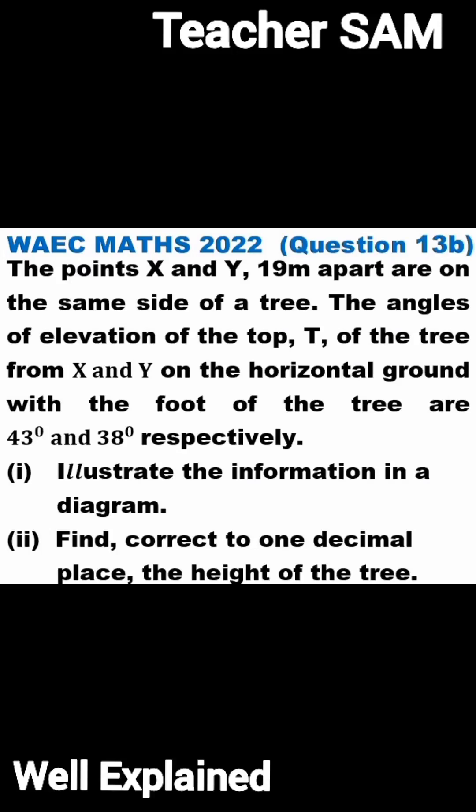The points X and Y, 90 meters apart, are on the same side of a tree. The angles of elevation of the top T of the tree from X and Y on the horizontal ground with the foot of the tree are 43 degrees and 38 degrees respectively. Illustrate the information in a diagram. Find correct to one decimal place the height of the tree.